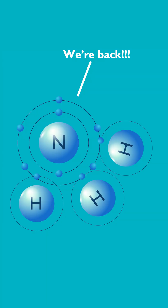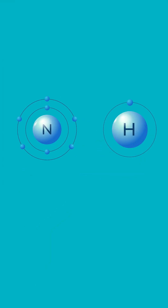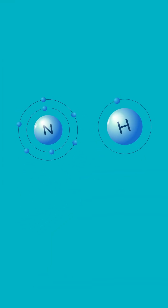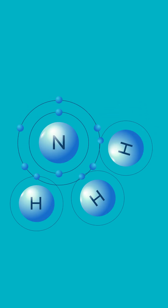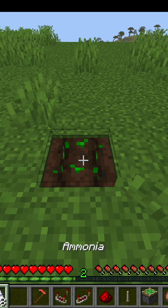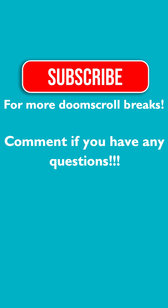Let's say NH3, or ammonia. On their own, nitrogen and hydrogen don't have much use and are very unstable, but when they bond together, they create one of the most popular fertilizing agents known to man. Pretty cool, right?